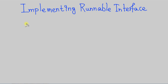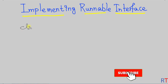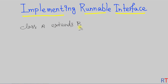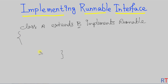In this video we're going to see how we can create a thread by implementing the Runnable interface. For example, if we have a class A which is already extending another class B, then it cannot extend the Thread class because in Java only one class can be extended. So in that case we have to implement the Runnable interface to create a thread, and we also have to define the public void run method inside class A.